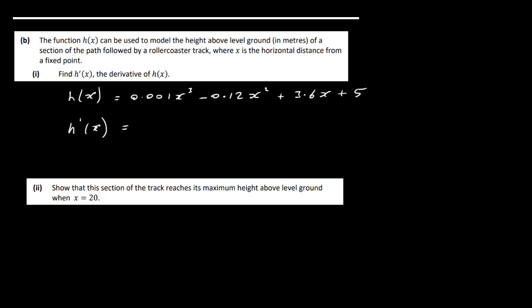So first thing, we multiply by 3, so it's 0.003, write down the x, reduce the power by 1. Multiply by 2, so it's 0.24, write down the x, reduce the power by 1, plus 3.6. That's our function differentiated. And that's it, simple as that.